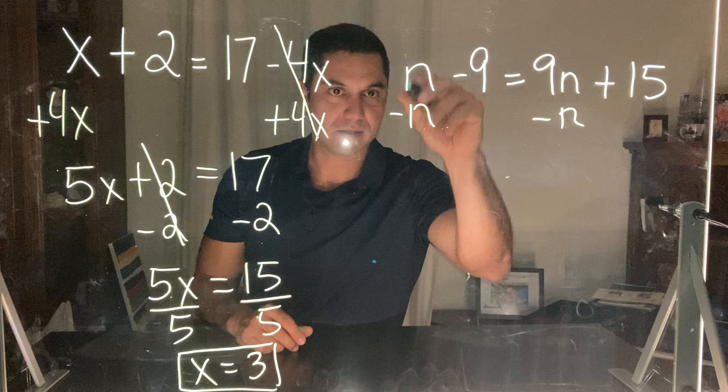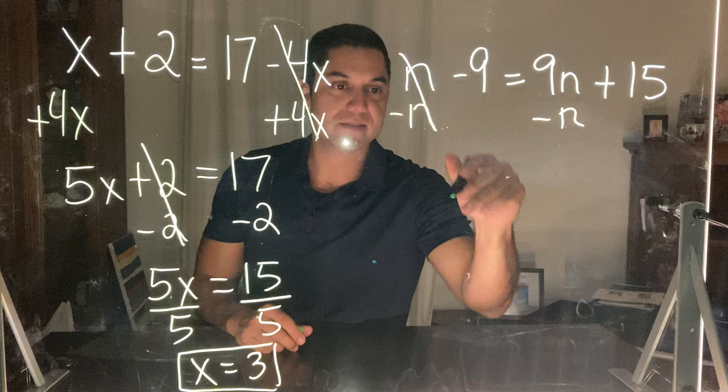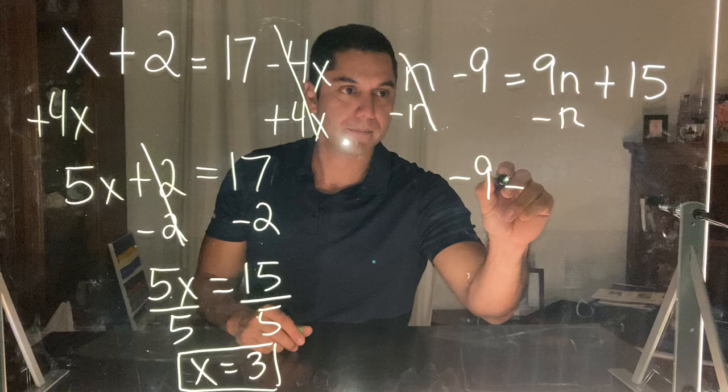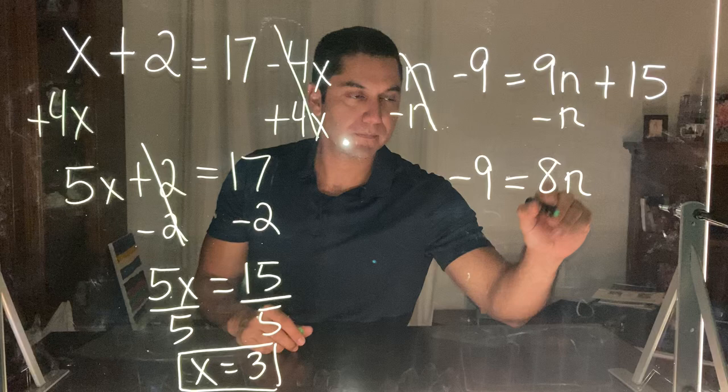So over here n minus n cancels each other out. Here it's important we're not going to bring down just a 9, we're also going to bring down a minus sign. We're basically bringing down a negative 9. Here if I have 9n's and I take away 1n, that's going to leave me with 8n's. Bring down my plus 15.